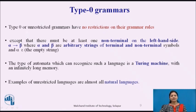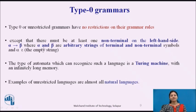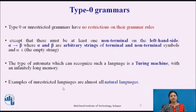Type 0 is unrestricted grammar. There is no restriction on grammar rules, so any grammar is allowed in Type 0, except that there must be at least one non-terminal on the left-hand side. The left-hand side contains at least one non-terminal producing beta, where alpha and beta are arbitrary strings of terminal and non-terminal symbols, and beta may belong to the empty string. The automaton that recognizes such languages is the Turing machine with infinite memory. Examples of unrestricted languages are almost all natural languages.